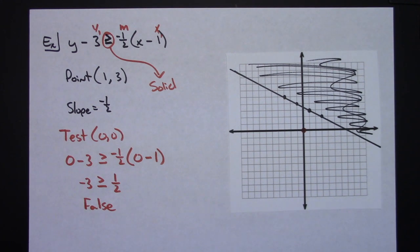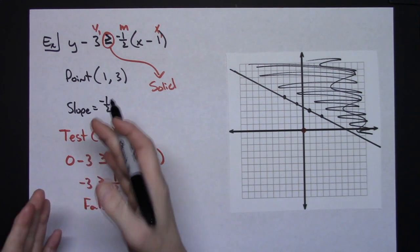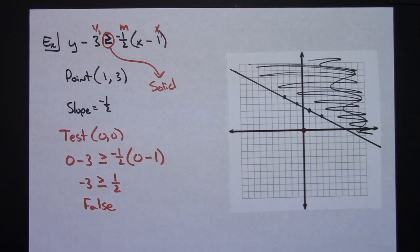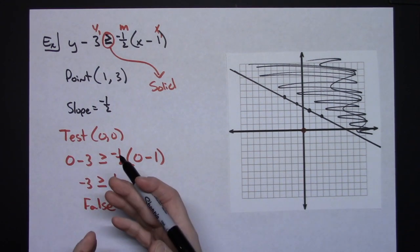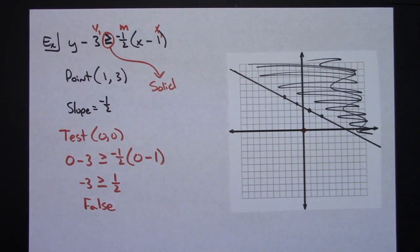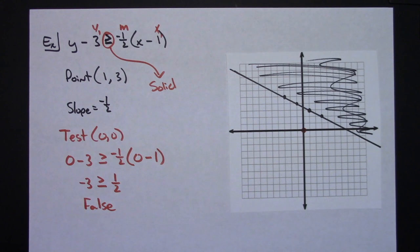So we've now done two examples: one graphing a point-slope equation, and one graphing a point-slope inequality. Thanks for watching — if the videos are helping, don't forget to hit the like button and subscribe to the channel.